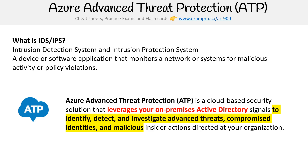Azure Advanced Threat Protection, ATP, is a cloud-based security solution that leverages your on-premise Active Directory signals to identify, detect, and investigate advanced threats, compromised identities, and malicious insider actions directed at your organization.